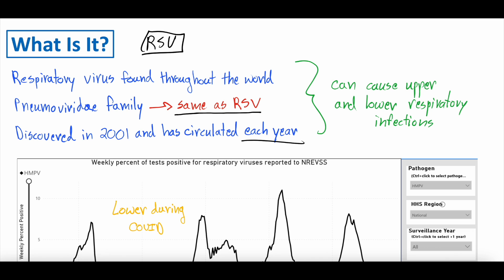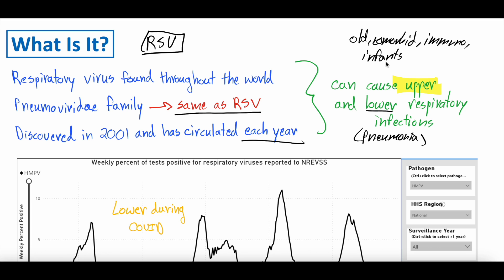It most often causes upper respiratory infections, which are usually not that serious, but it can cause lower respiratory infections such as pneumonia. It can be serious, especially for people who are elderly, immunosuppressed, infants, or otherwise at increased risk for severe disease — whether that's from human metapneumovirus, RSV, influenza, or COVID. The risk factor profile is somewhat similar. But this is not a new virus. It has circulated every year and is in a family of viruses we know.